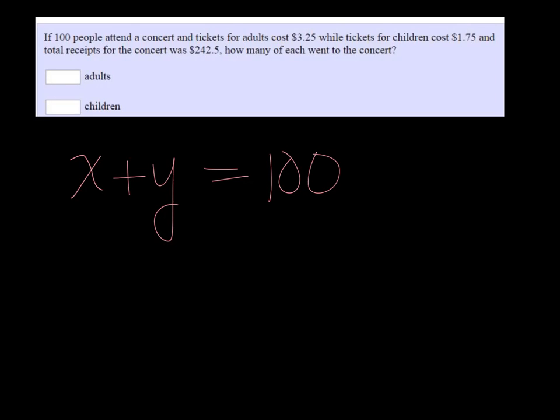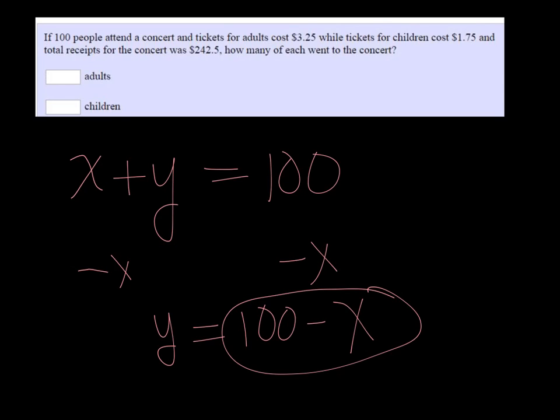But if I were to solve for Y, subtract X on both sides, then Y would be 100 minus X. So we could have 100 minus X to be the number of children, and X be the number of adults. And that way our variables are consistent, they're the same.